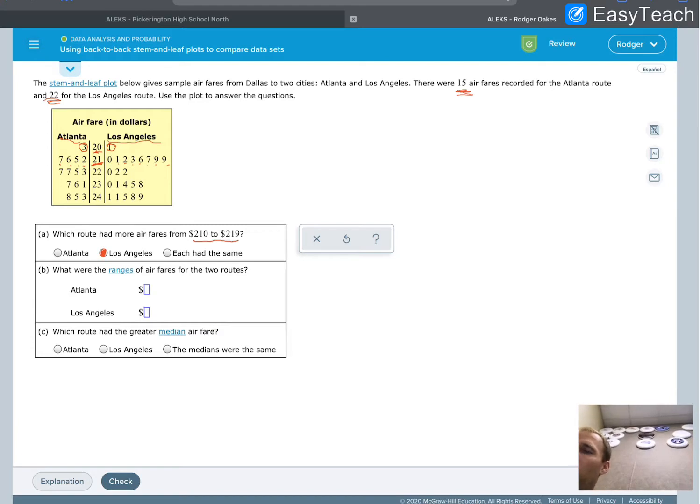What were the ranges of airfares for the two routes? For Atlanta, the lowest one is the 3, and the highest one is the 8, because that 8 represents 248. So for Atlanta, we have 248, and the low was 203. The range is just the highest minus the lowest. If I can do my math right, it's 45.